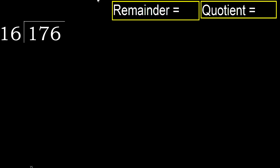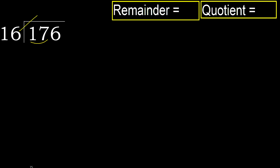176 divided by 16. 1 is less, therefore next. 17 is not less, therefore with 17. 16 multiplied by which number is nearest to 17 but not greater?